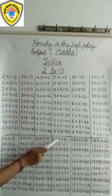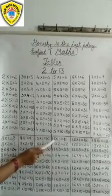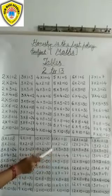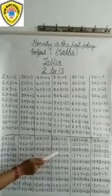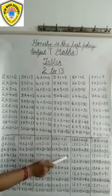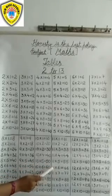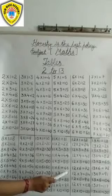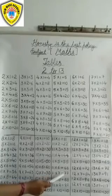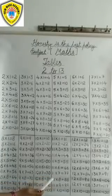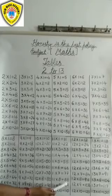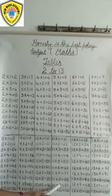11 1s are 11. 11 2s are 22. 11 3s are 33. 11 4s are 44. 11 5s are 55. 11 6s are 66. 11 7s are 77. 11 8s are 88. 11 9s are 99. 11 10s are 110.